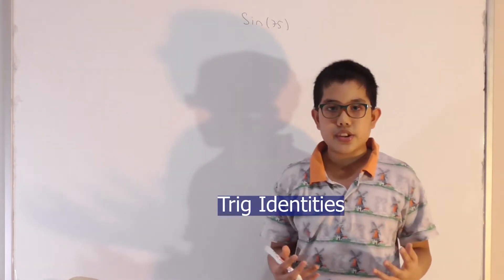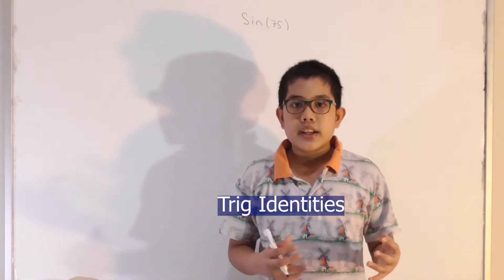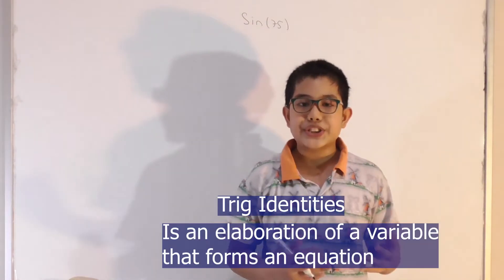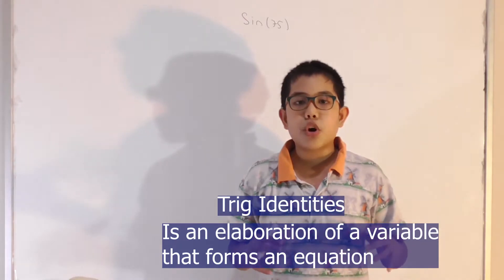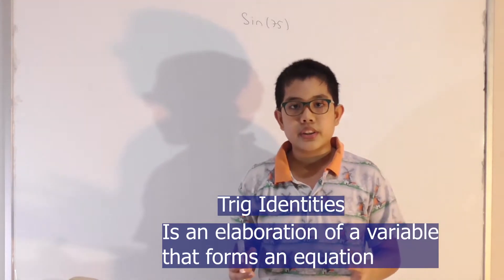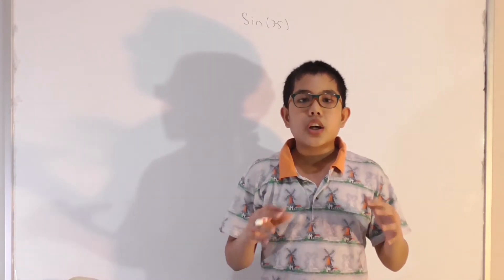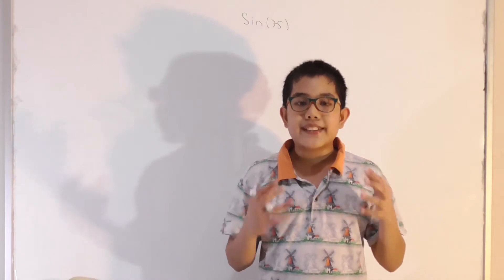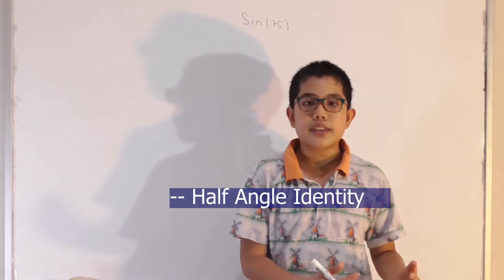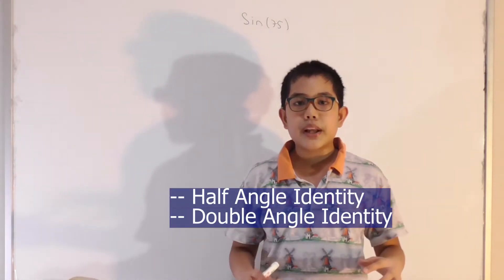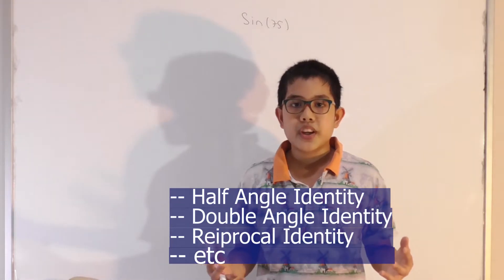So what are trig identities? Basically, trig identities are an elaboration of a variable that forms an equality — basically an equation. There are lots of different trig identities such as the half-angle identities, double-angle identities, reciprocal identities, and much more.